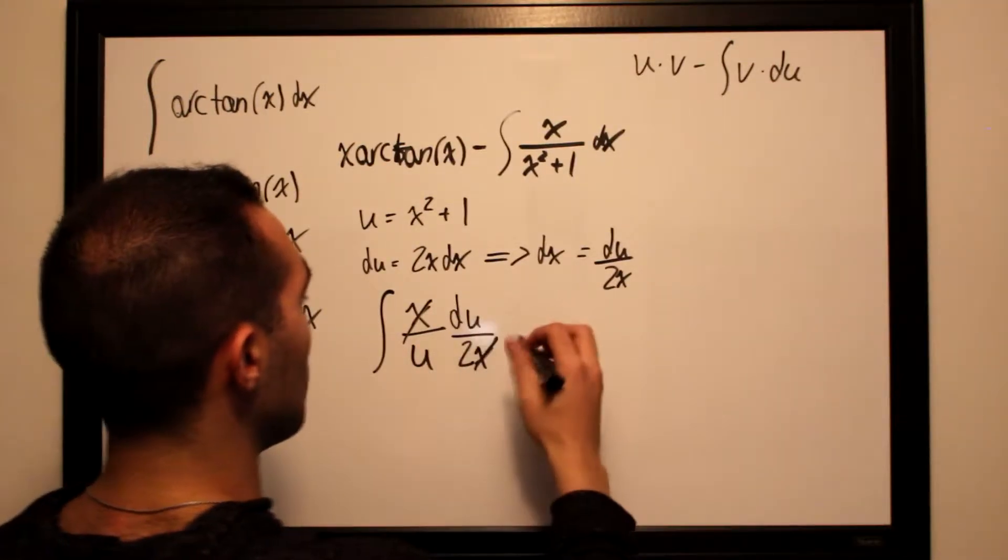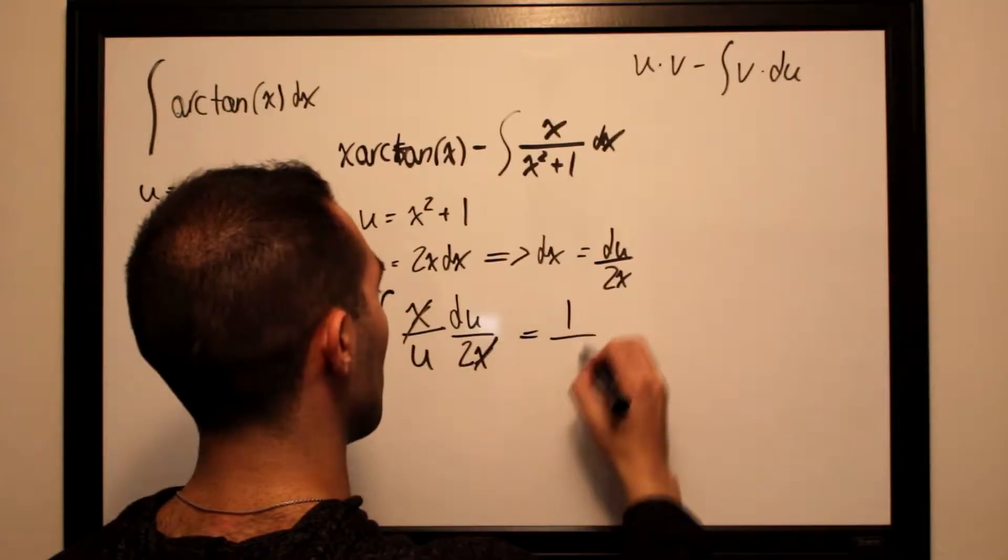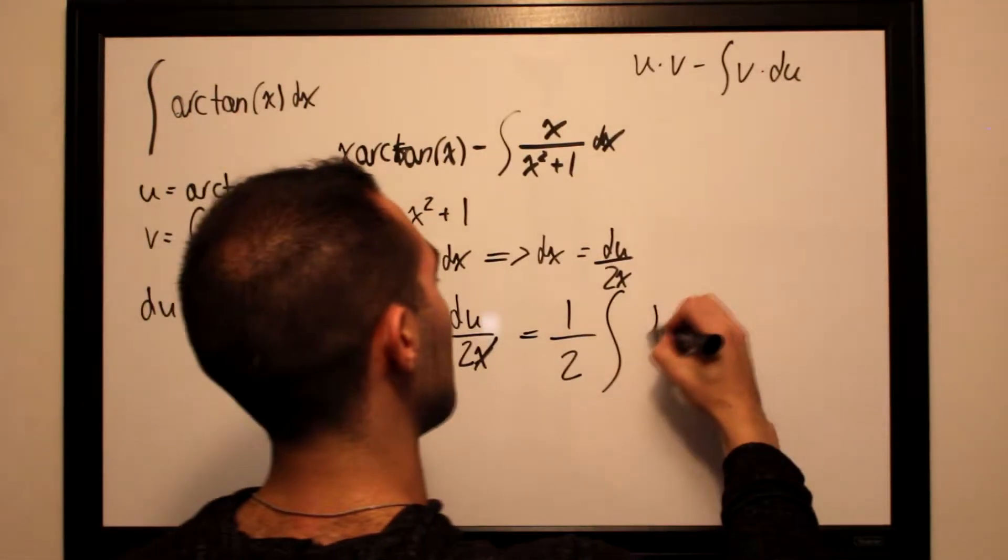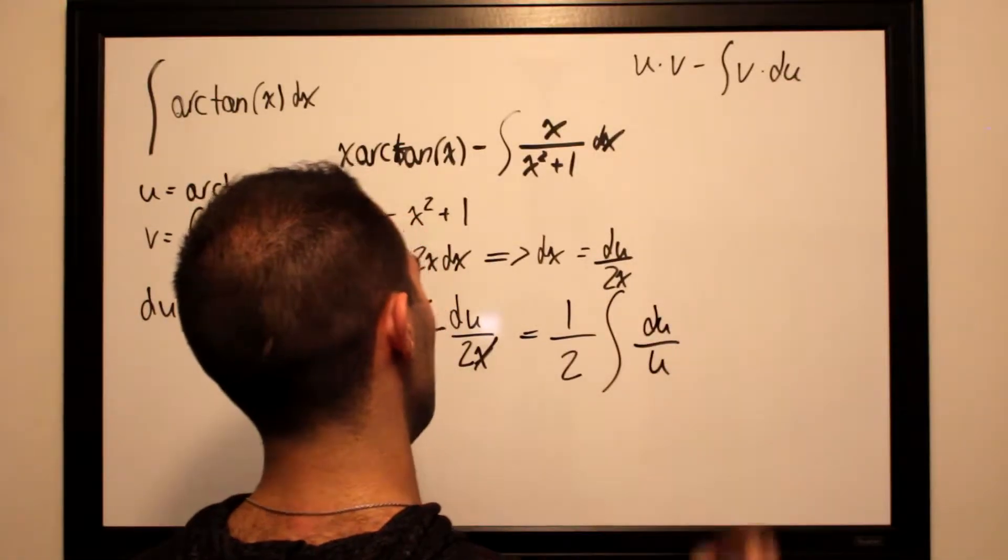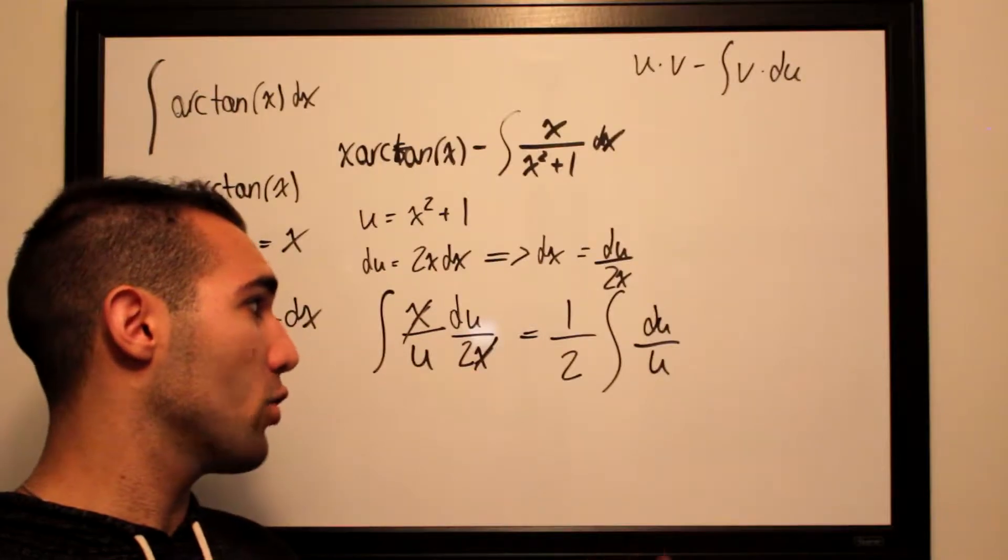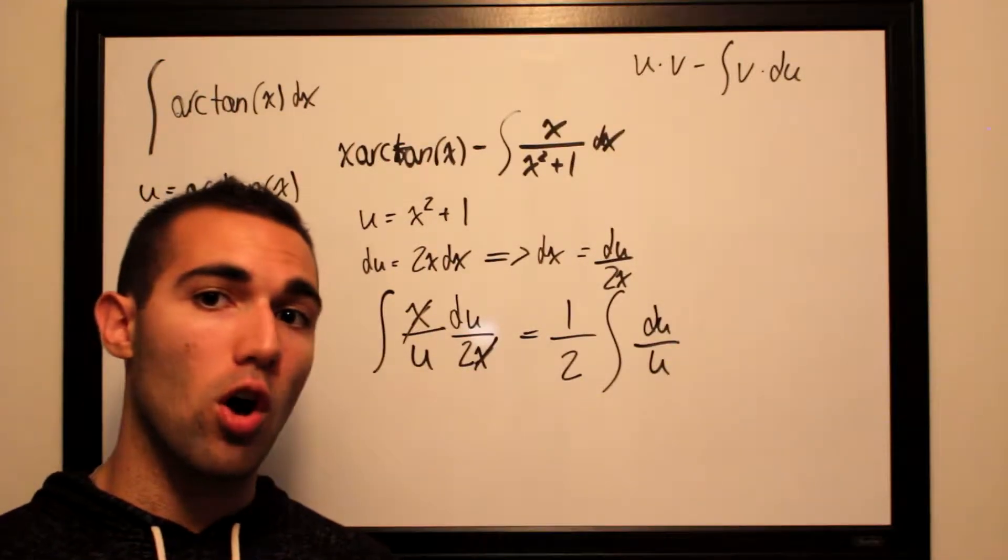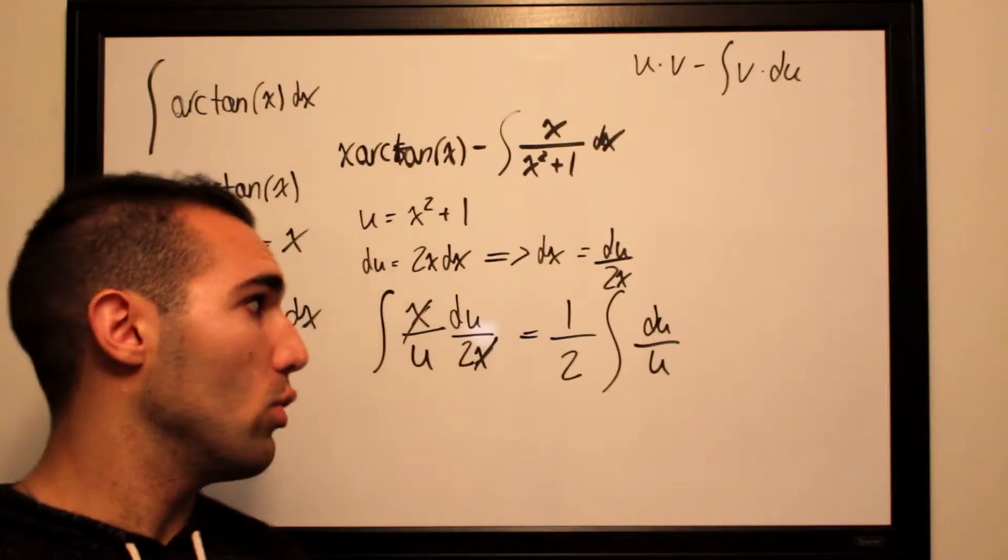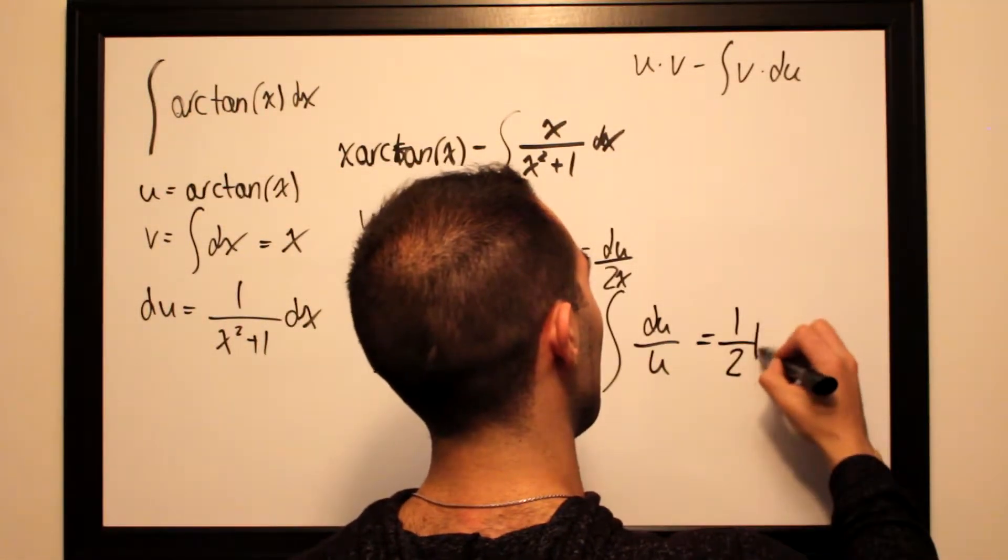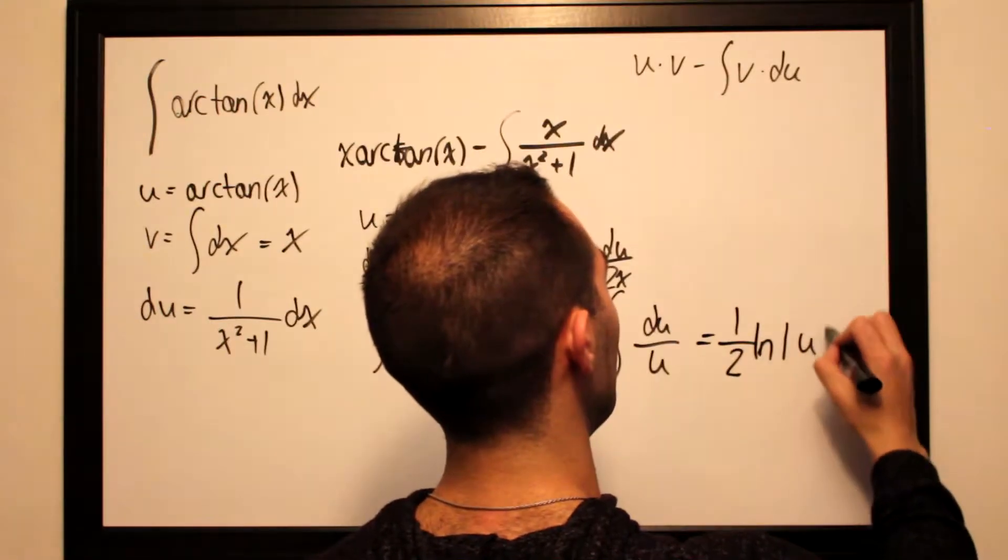All we have left is we can pull out a half in front of the integral. All we've got left is du divided by u. This is one of the simple integrals you're expected to remember. If you integrate du over u, you get the natural log of absolute value of u. So this becomes half ln of absolute value of u.